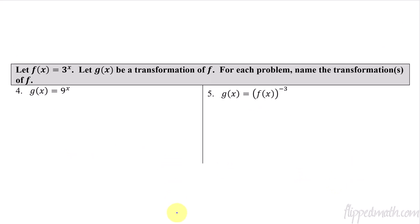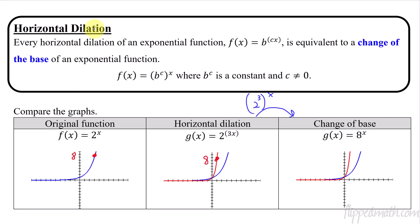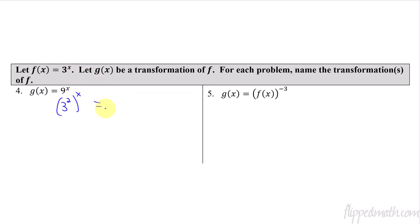For the problems here, you just need to recognize, for example, that 9 to the x is the same as 3 squared to the x, which is 3 to the 2x. So from the original 3 to the x, we've changed the base by multiplying x by 2. That is a horizontal dilation — you could say you're horizontally shrinking it by a factor of one-half. My answer key just says horizontal dilation and stops there; you don't need to specify stretch or shrink amount unless asked.